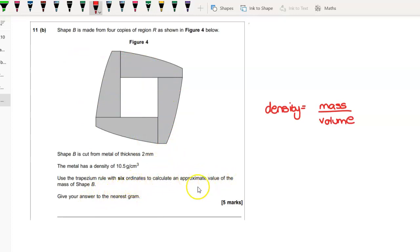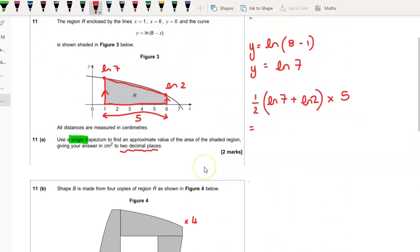Use the trapezium rule with six ordinates to calculate an approximate value of the mass of shape B. Right, so shape B is four of those trapeziums. So we've got four of that shape.